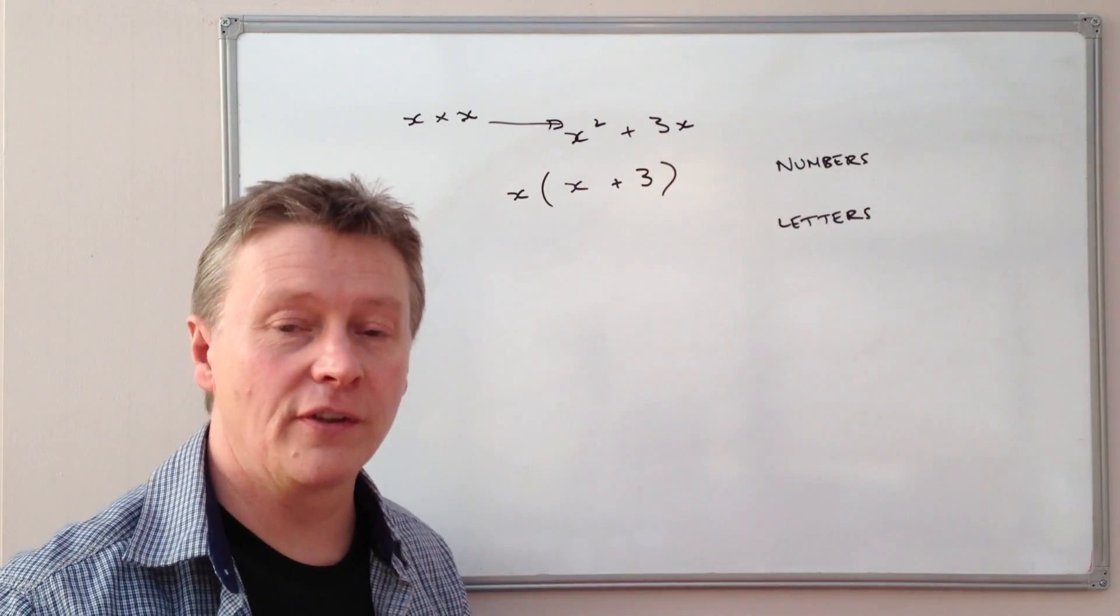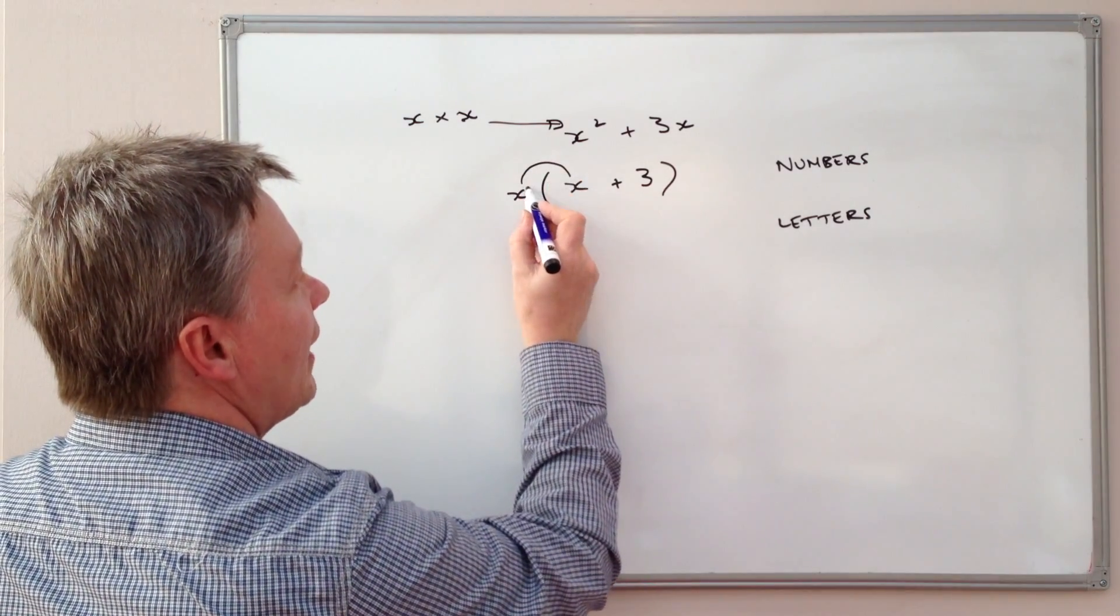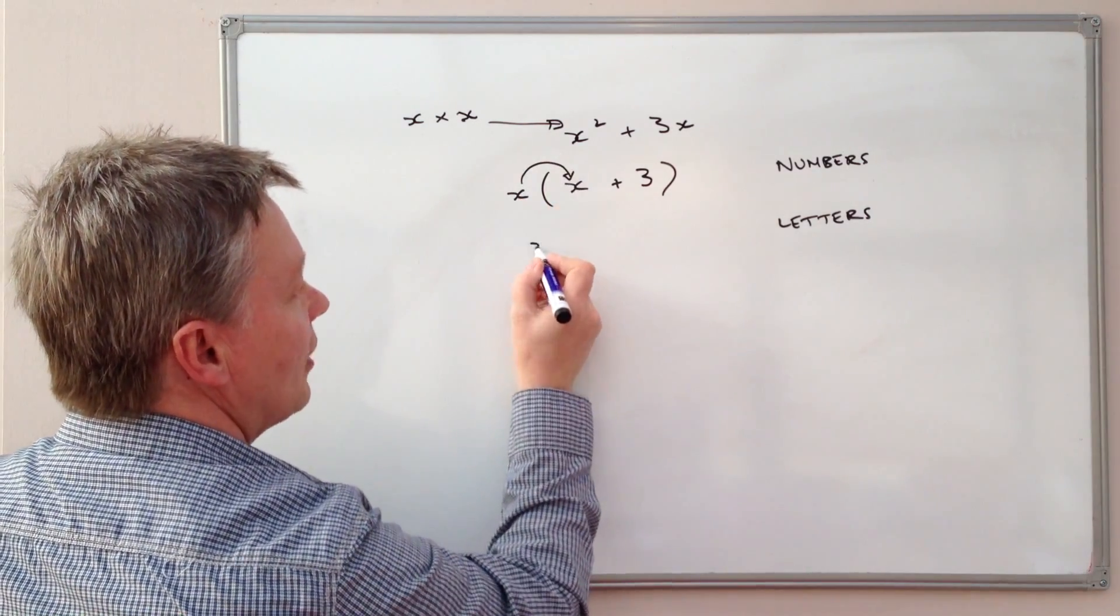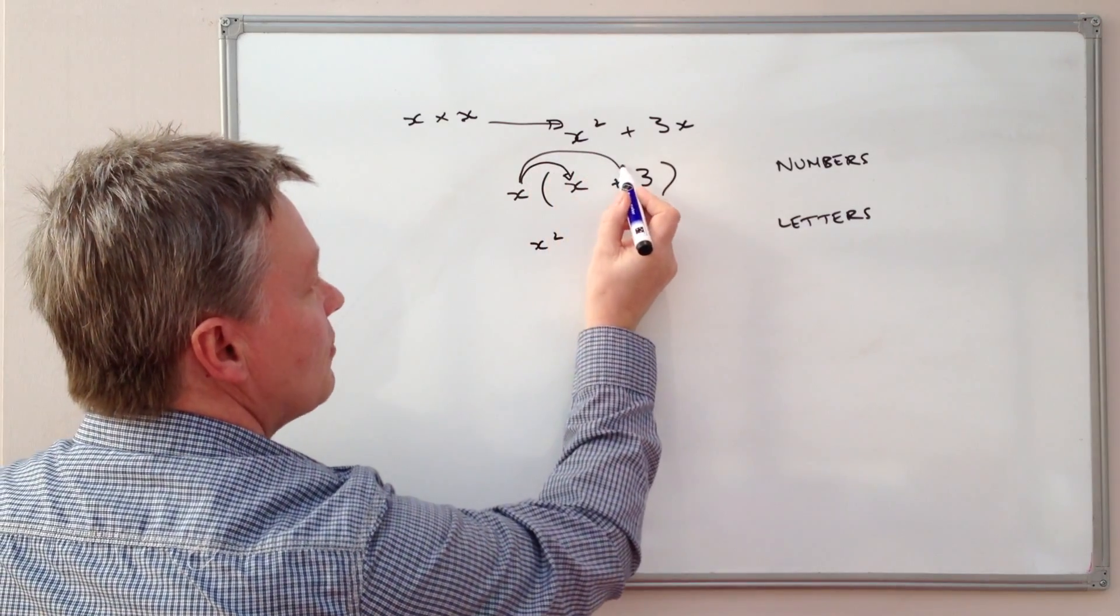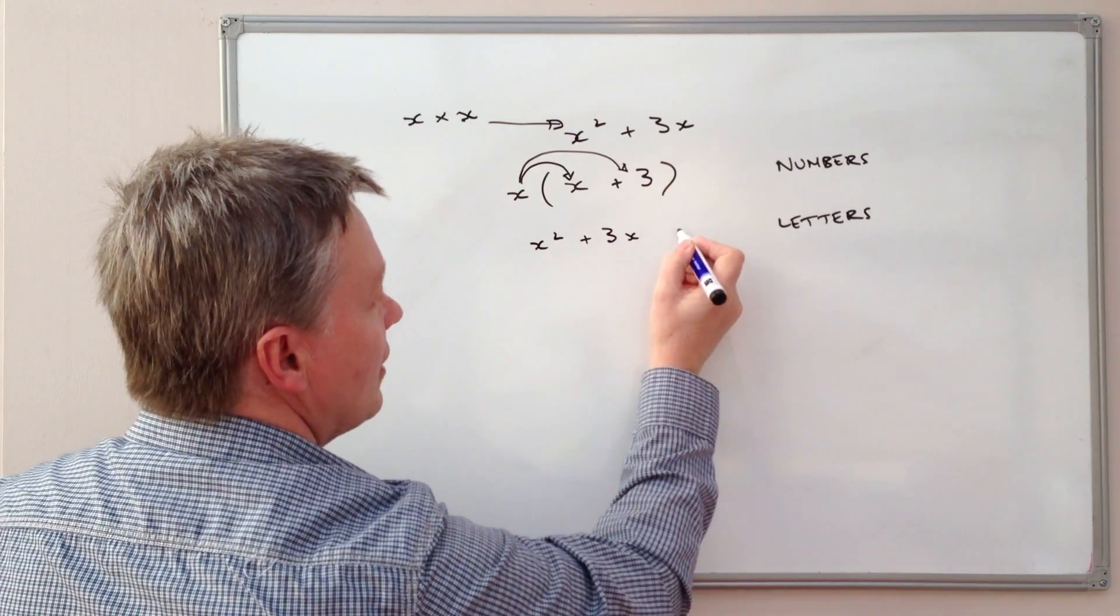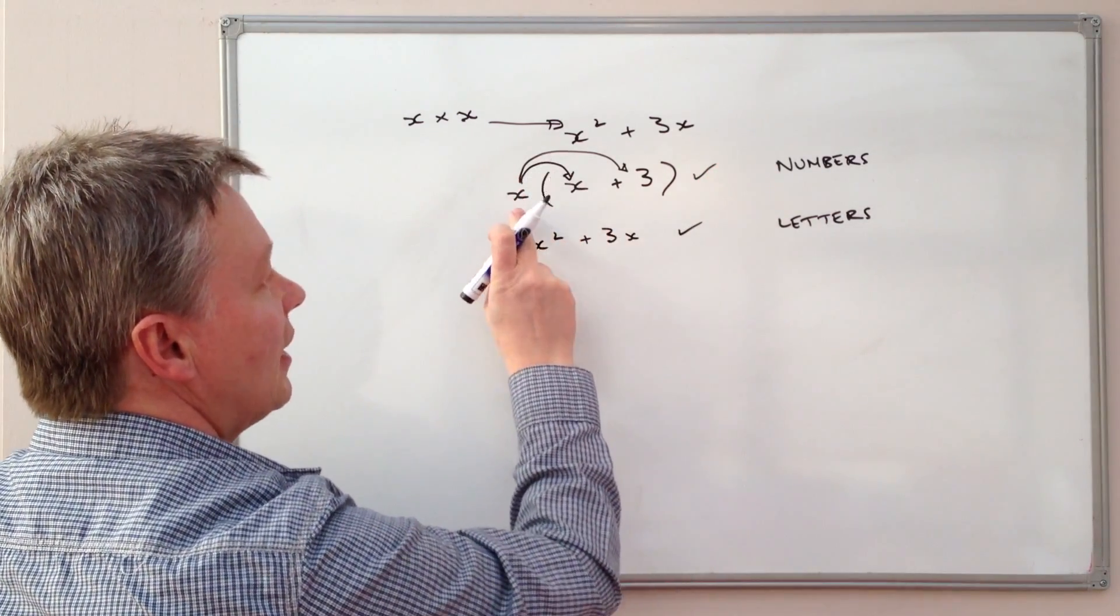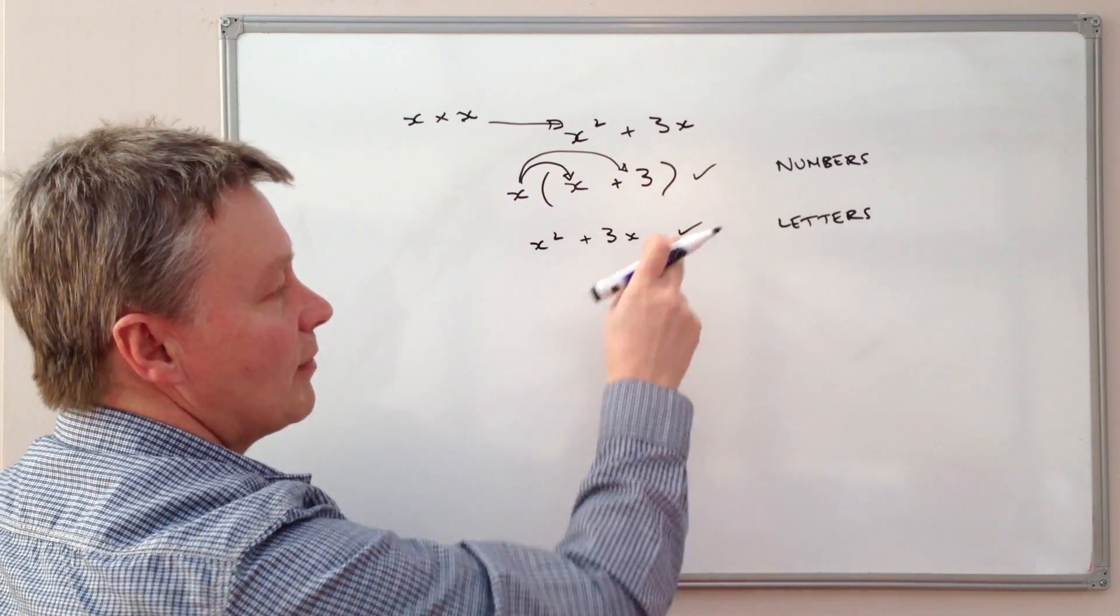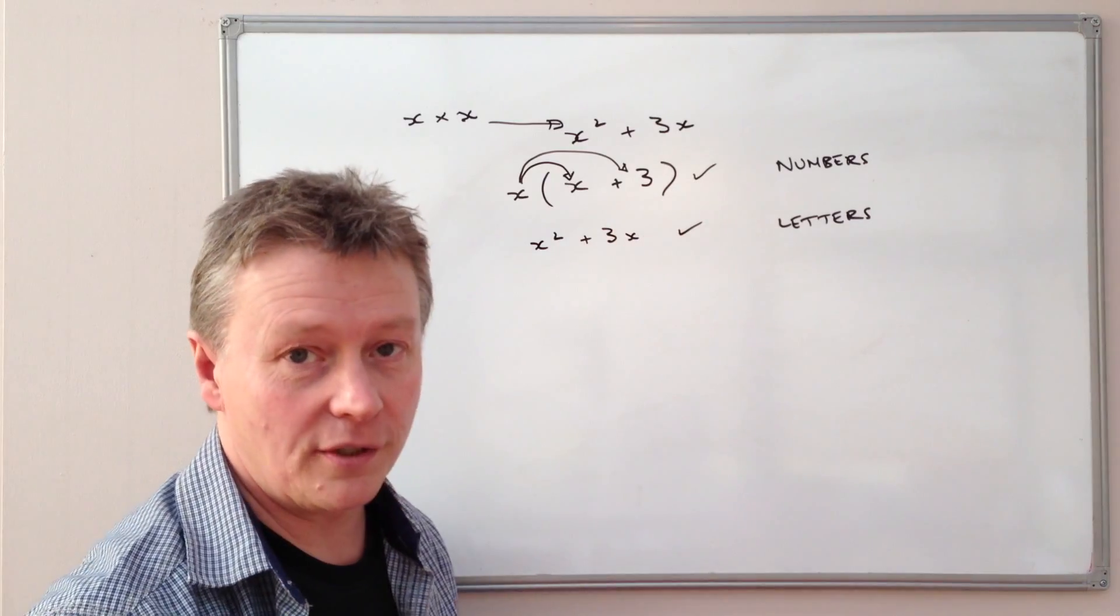So what I'll do now is just check it. So if I multiply x times x, I'm going to get x squared. If I multiply x times positive 3, I'm going to get positive 3x. So that must be correct. And this expression here, x brackets x plus 3, is the factorisation of this. So this would be the answer to the question.